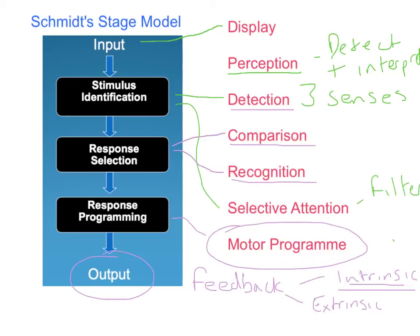To sum up the stage model: we get information that's in our display, all around us. We then identify a stimulus using perception and our senses. We filter out irrelevant stimuli and keep the important stimuli. We then compare that stimuli to previous experiences or past experiences in the long-term memory.